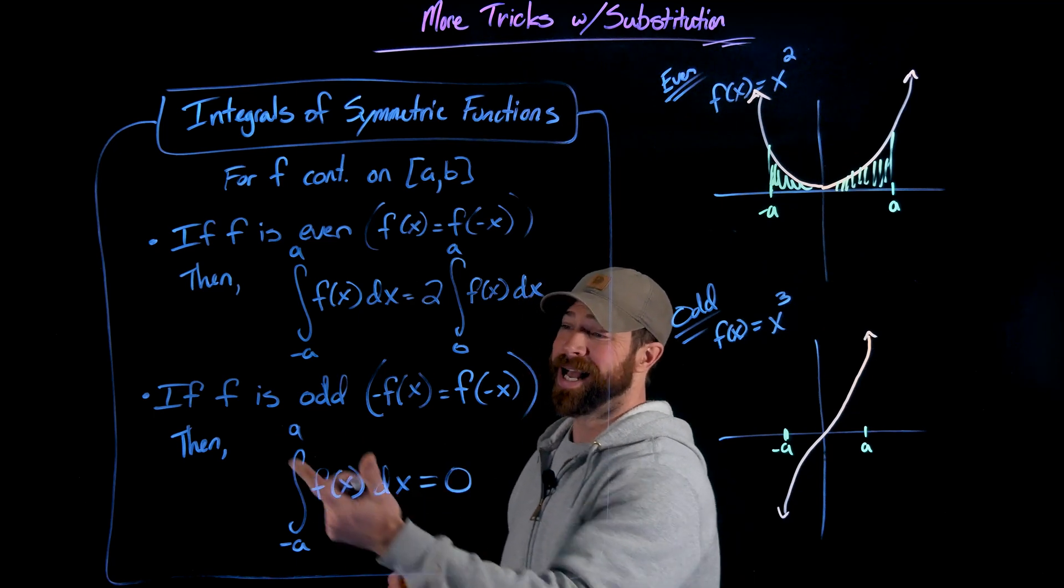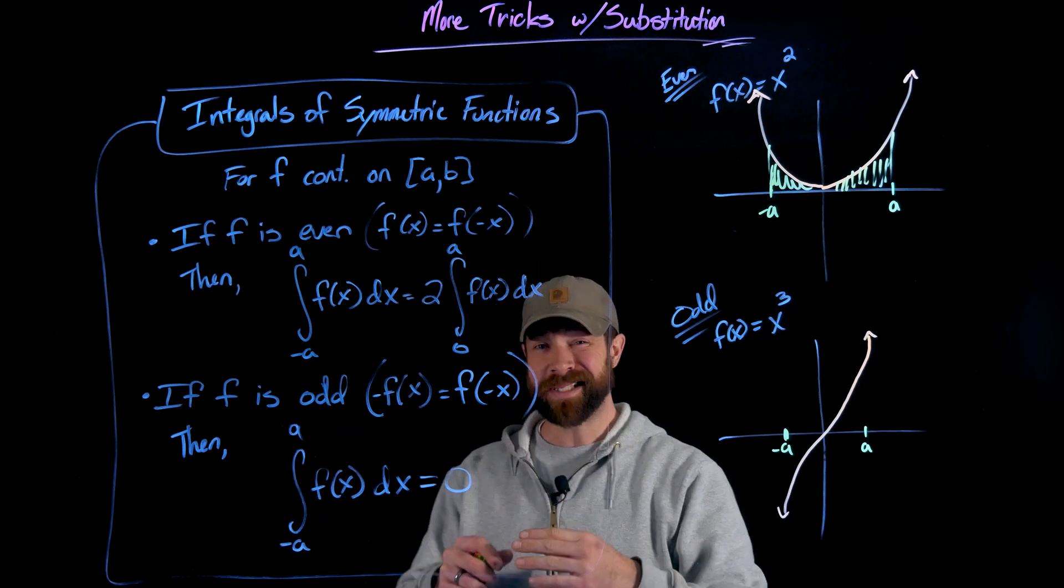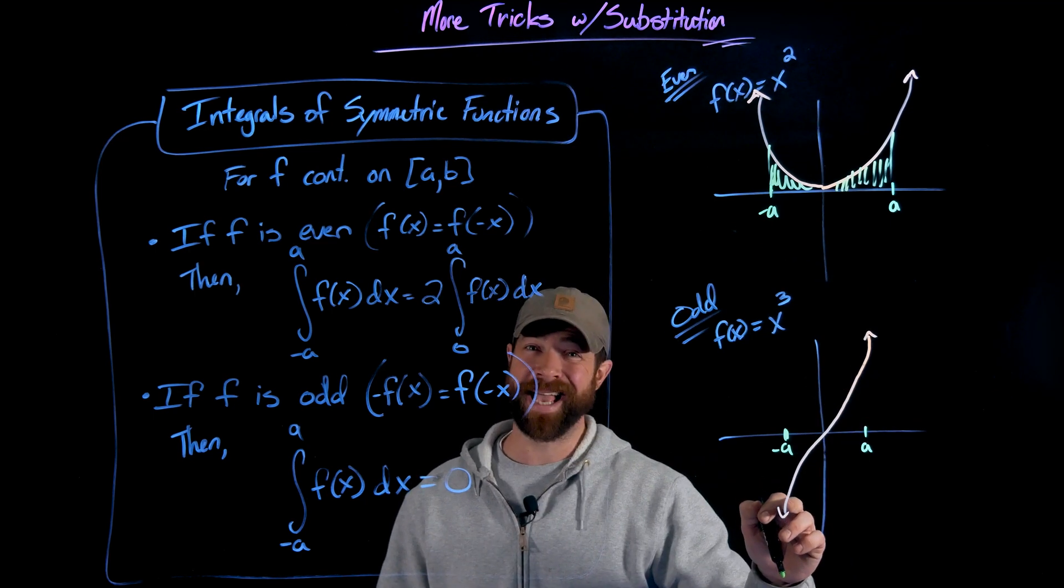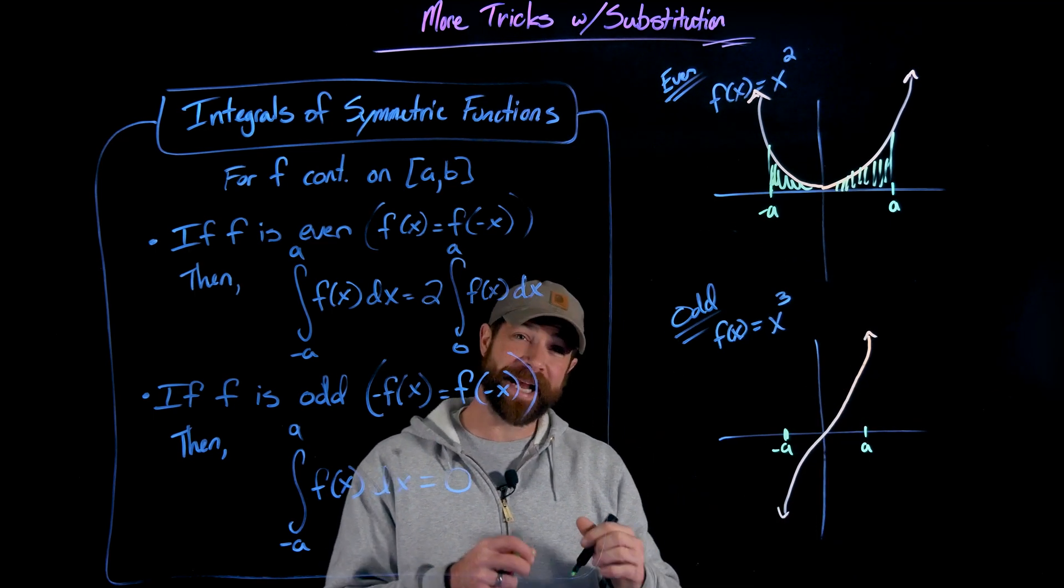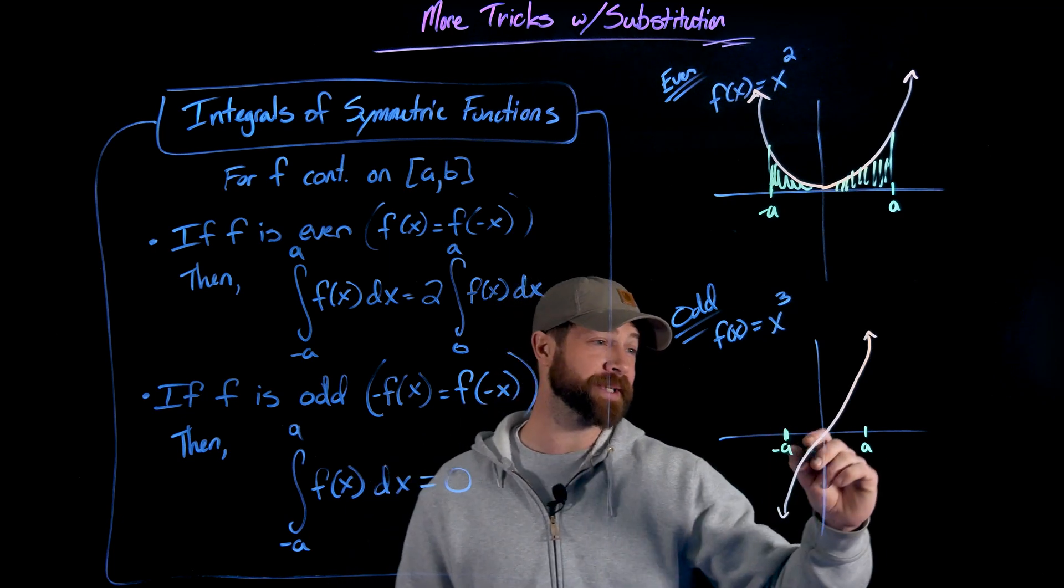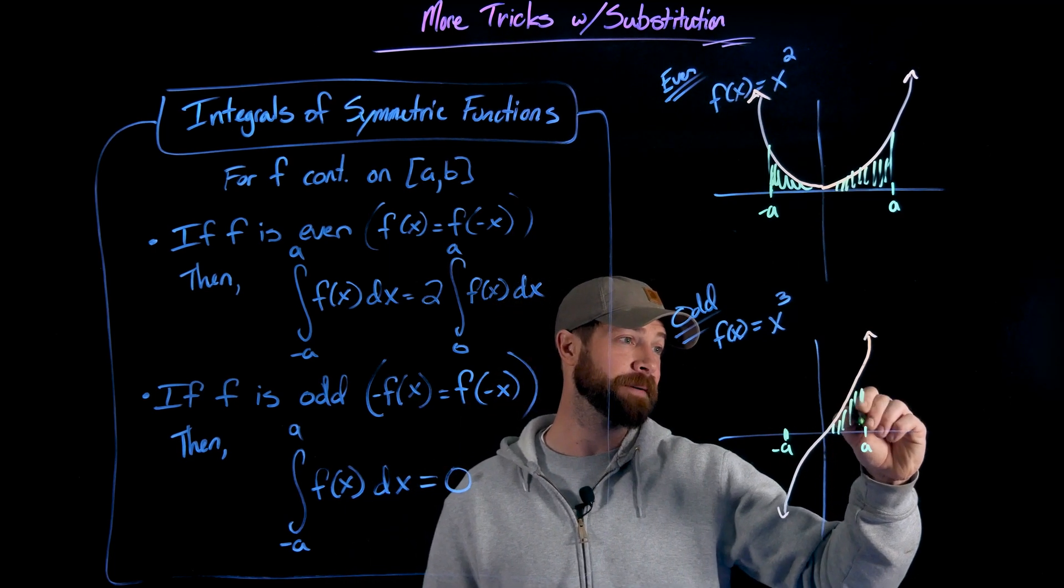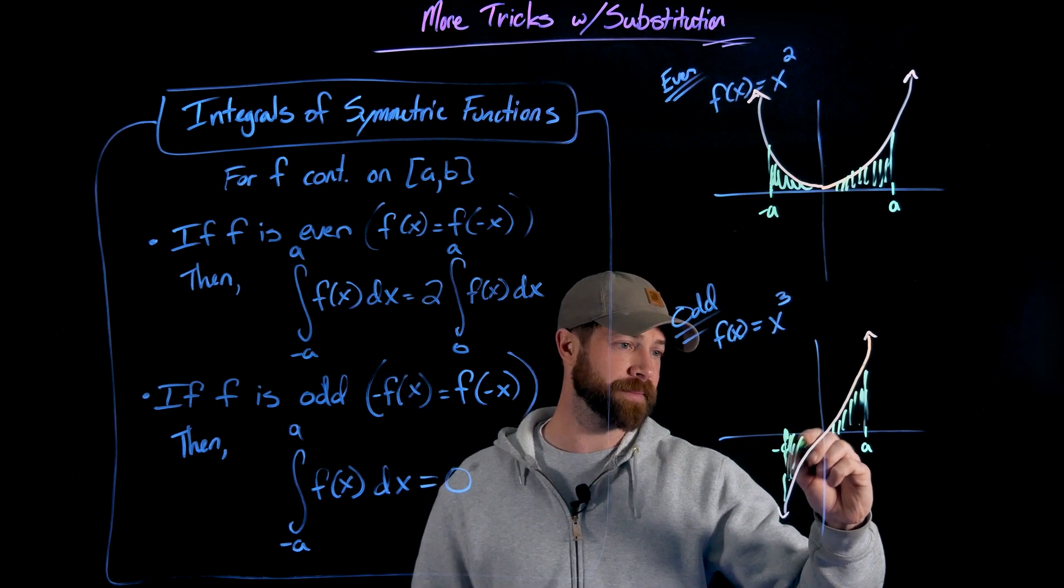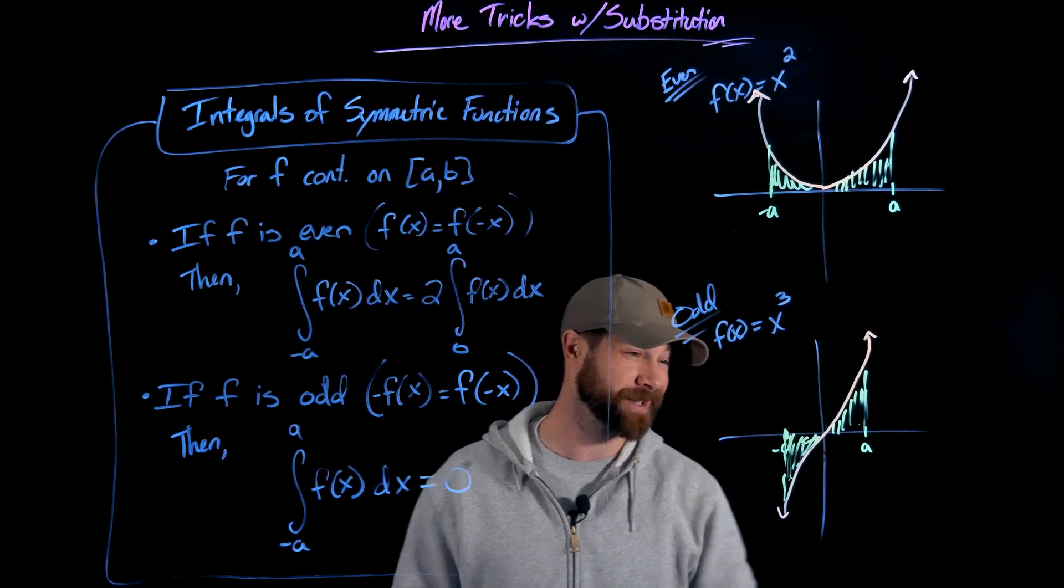Moving on to the second statement is, if f is odd, now this is the statement to where this value at a is the opposite at negative a. So what happens is these areas are actually completely opposite of each other. So we have this area from zero to a in this case right here. And we have this area from negative a to zero.